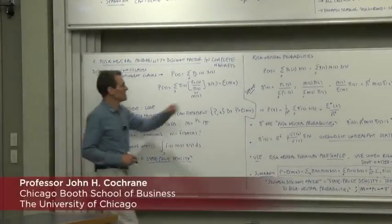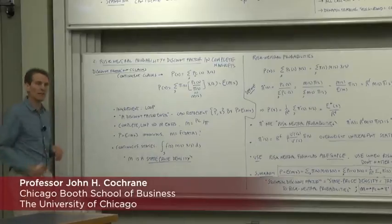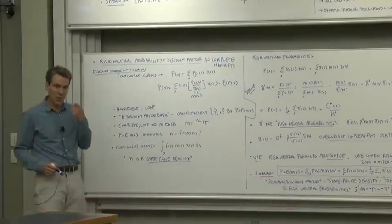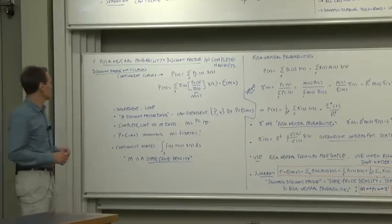We're going to stay with the assumptions that markets are complete for a while. That simplifies a lot of things, and then we'll go on later to incomplete markets. So assume that markets are complete, let's think about pricing other securities.